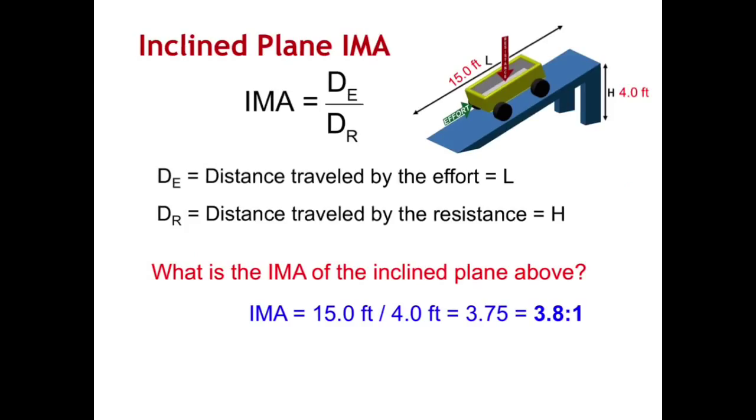Ideal mechanical advantage for an inclined plane is found by using the same formula you used before. IMA equals distance effort over distance resistance. Distance effort is the distance traveled by the effort, which is L. So that's the length of the ramp. It's the length that you're actually putting the effort towards to pull or push that resistance force. Distance resistance is the distance traveled by the resistance. We're going to call that the height, H.